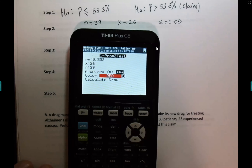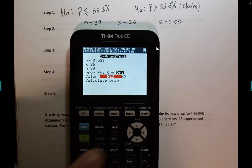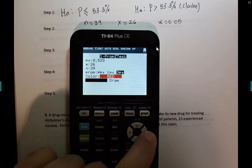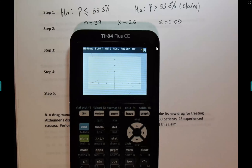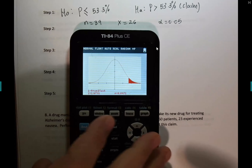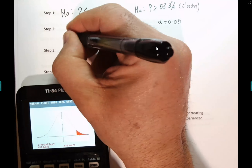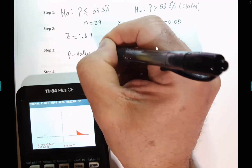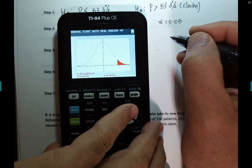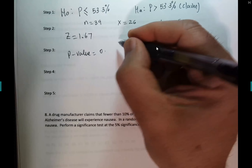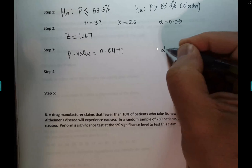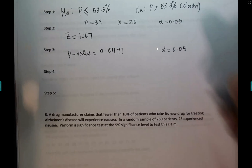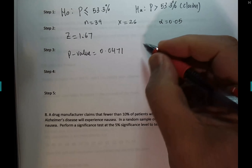Let's show you the p-value in action — draw. There you go: z = 1.67 and the p-value is 0.0471. Alpha is 0.05.